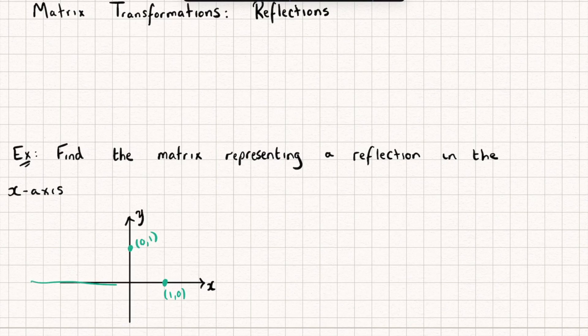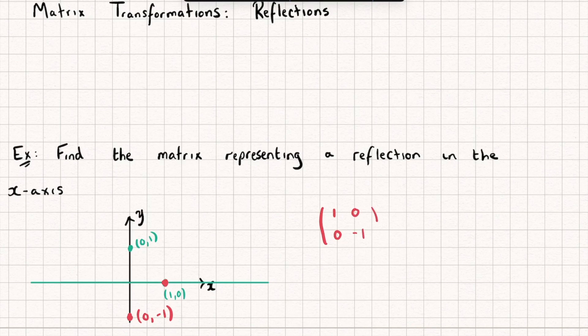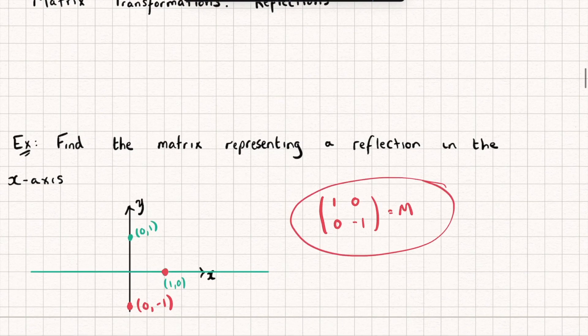We're having a reflection in the x-axis. The point (1, 0) is going to remain fixed, so the first column of my transformation matrix is just (1, 0). The point (0, 1) is going to be reflected down to the point (0, -1), so the second column of my transformation matrix is going to be (0, -1). And so we can describe a reflection in the x-axis by this matrix.